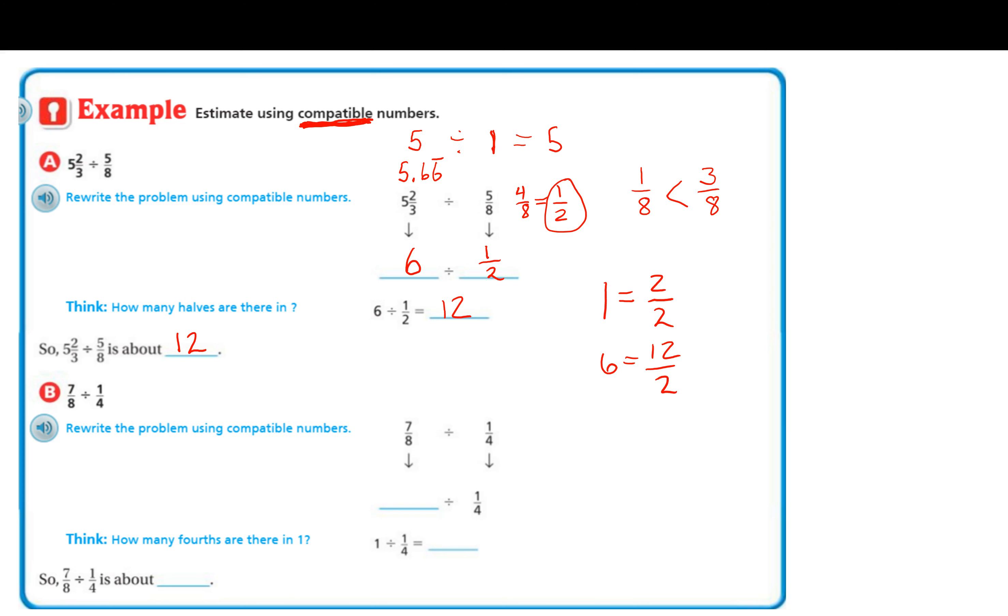All right, let's go on to part B. 7/8. Well, 7/8 is very close to 8/8, and 8/8 would be one whole. And then 1/4, well, that's already a pretty easy number to work with.